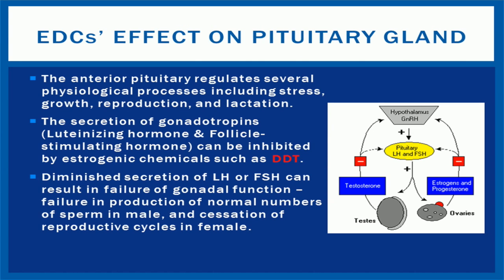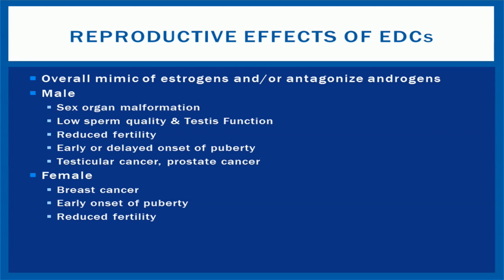Let's go over just one way in which EDCs interfere with the endocrine system by focusing on the pituitary glands. The anterior pituitary gland regulates several physiological processes including stress, growth, reproduction, and lactation. The secretion of gonadotrophins — that is, luteinizing hormone LH and follicle stimulating hormone FSH — can be inhibited by estrogenic chemicals such as DDT. Diminished secretion of LH or FSH can result in the failure of gonadal function, potentially causing a decrease in sperm count in males and cessation of reproductive cycles in females. Overall, EDCs mimic estrogens or antagonize androgens, and this can have a devastating effect on our reproductive systems.